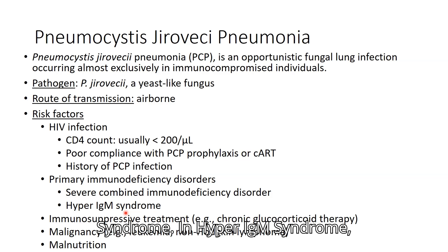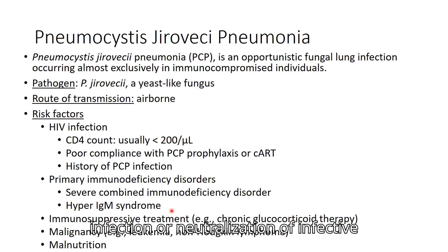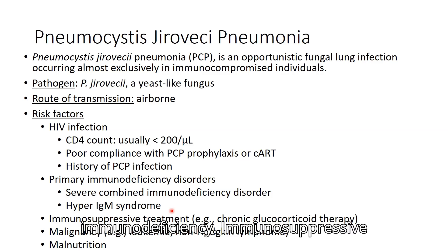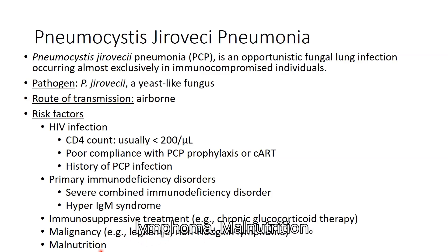In hyper-IgM syndrome, there are elevated levels of IgM and deficient levels of IgG. Since IgG is required for clearance of infection and neutralization of infective agents, this results in immunodeficiency. Other risk factors include immunosuppressive treatment such as chronic glucocorticoid therapy, malignancies such as leukemia and non-Hodgkin lymphoma, and malnutrition.